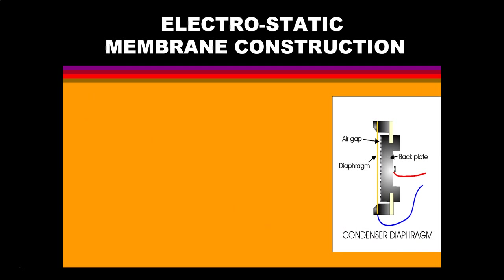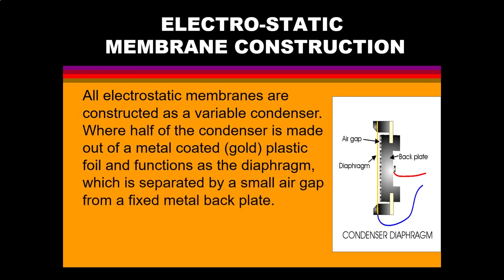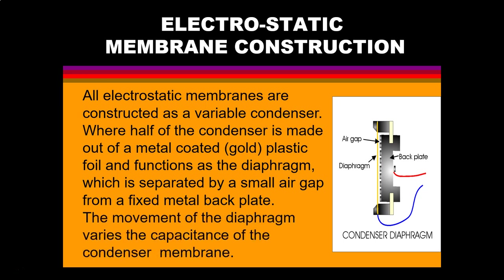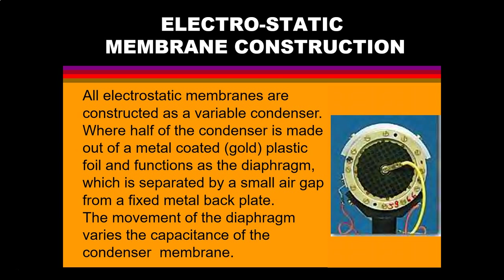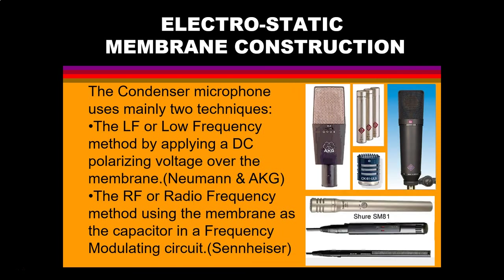The electrostatic microphone has membranes constructed as a variable condenser or capacitor, where one half of the condenser is made out of a metal-coated plastic foil — the coating is usually gold — and functions as the diaphragm, which is separated by a small air gap from a fixed metal back plate. The movement of the diaphragm varies the capacitance of the condenser membrane. The condenser microphone uses mainly two techniques: the LF method by deploying a DC polarizing voltage over the membrane, or an RF method using the membrane as a capacitor in a frequency modulating circuit.